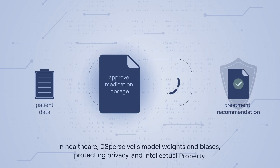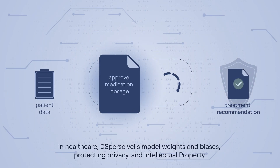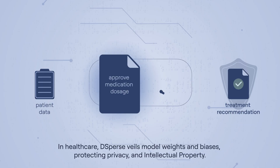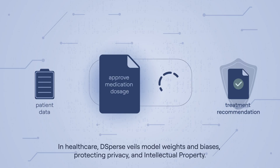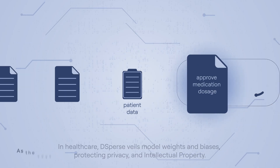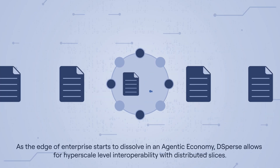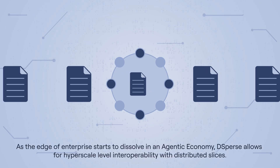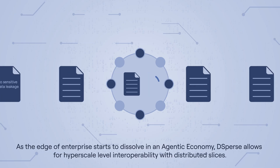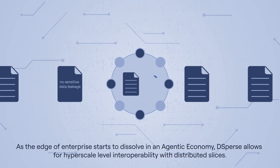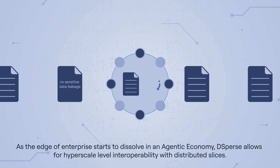In healthcare, D-Sperse veils model weights and biases, protecting privacy and intellectual property. As the edge of enterprise starts to dissolve in an agentic economy, D-Sperse allows for hyperscale-level interoperability with distributed slices.